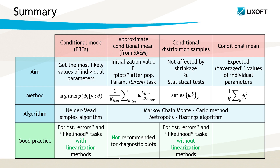The conditional mode and conditional mean are used as individual parameters directly in the model diagnosis. In Monolix, the conditional mode is obtained with the Nelder-Mead simplex algorithm that maximizes the conditional distribution. As the most likely value, it is used in model prediction plots and in the linearization method for the estimation of the standard errors and likelihood. So it is a good practice to run this task if standard errors and likelihood are going to be computed with the linearization option.